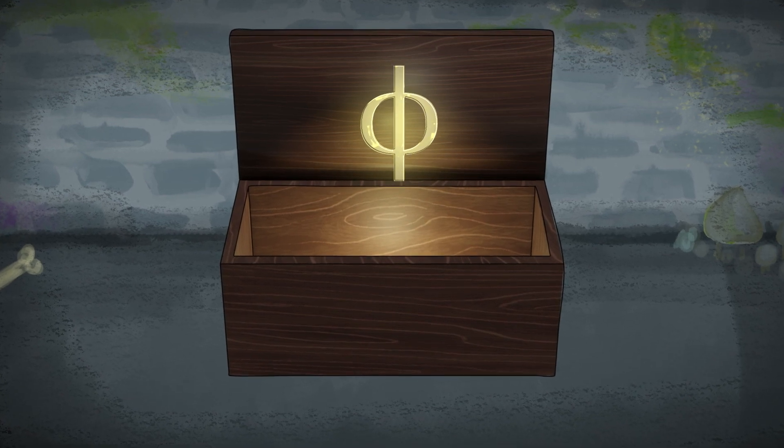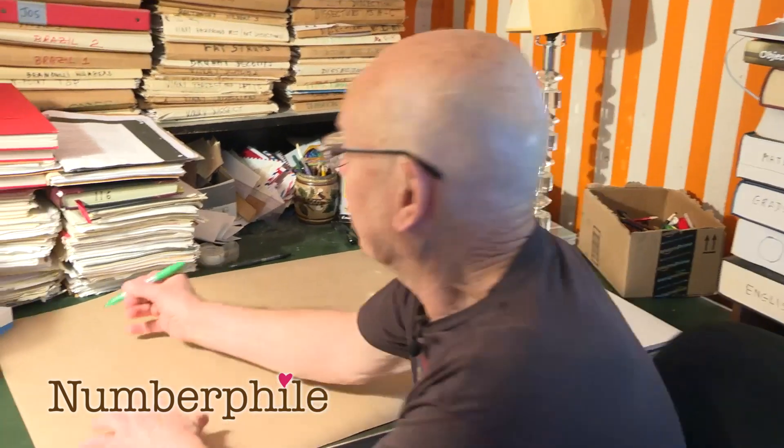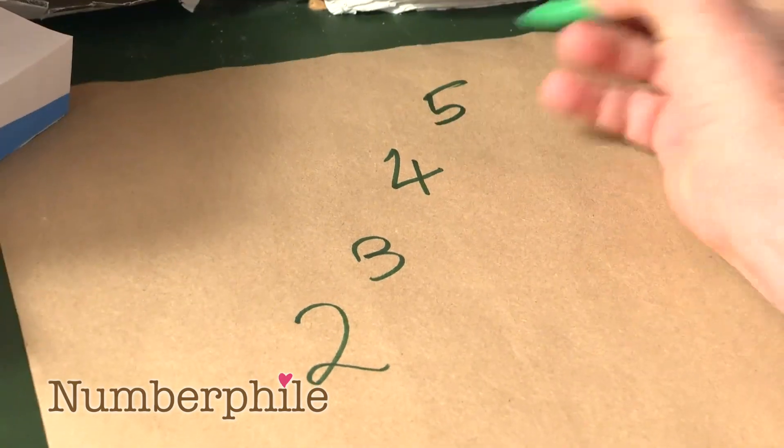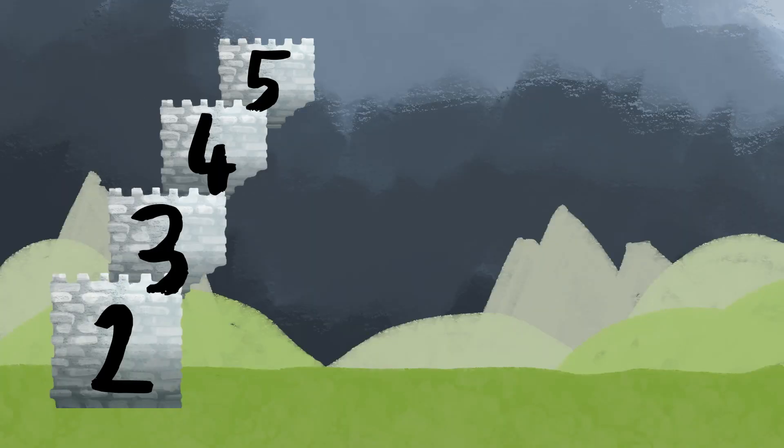If you want to describe a moderately large number, Brady, you'd describe it as writing a tower of numbers. For instance, you might write 2 to the 3 to the 4 to the 5, and that's not a very big number, but it's big enough.